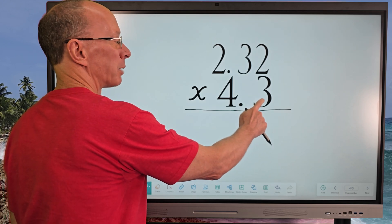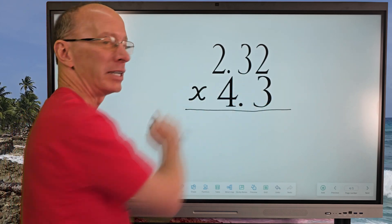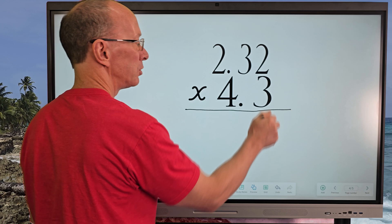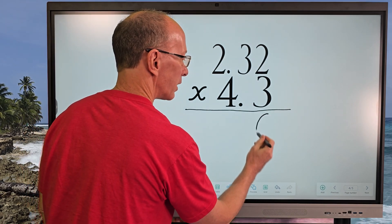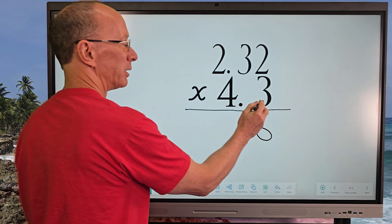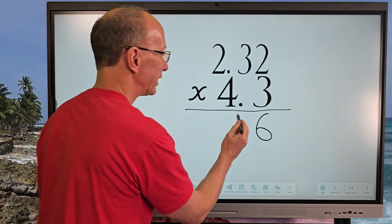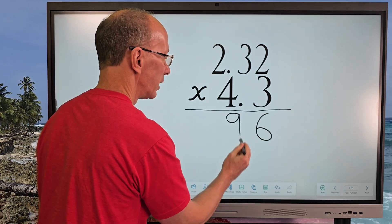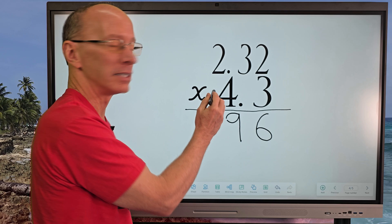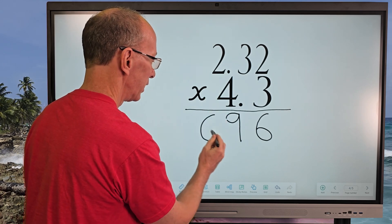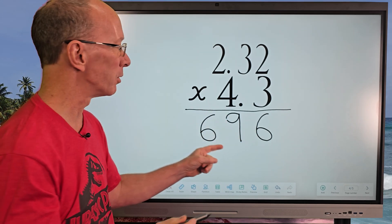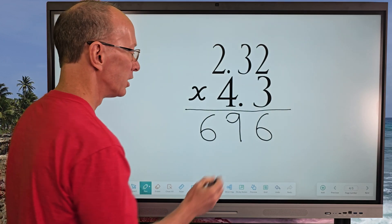First of all, we're going to multiply 3 times 2, 3 times 3, and 3 times 2. So 3 times 2 would be 6, I put the 6 right here. And I'm going to take 3 times 3 would be 9. And then 3 times 2 is 6. As you see, I did not put a decimal in this number right here. We're going to do that at the end.